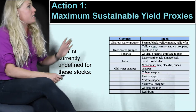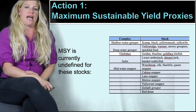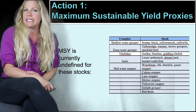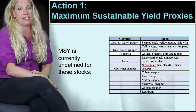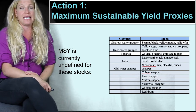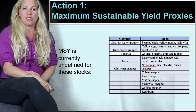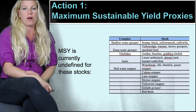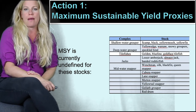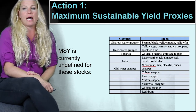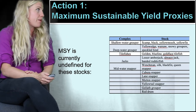This is a summary of the stocks that don't currently have a maximum sustainable yield or proxy defined: shallow water groupers, deep water groupers, tilefish, jacks, midwater snapper, cobia snapper, lane snapper, mutton snapper, yellowtail snapper, goliath grouper, and red drum.